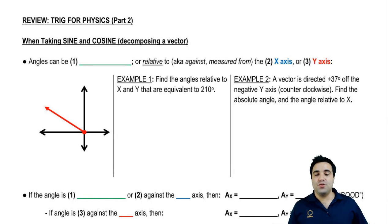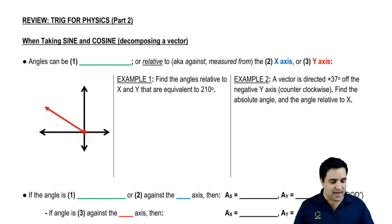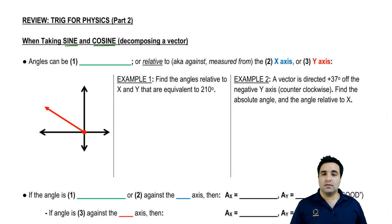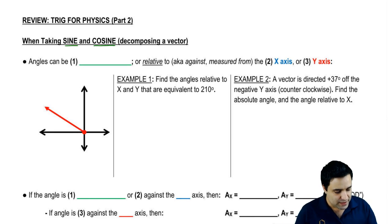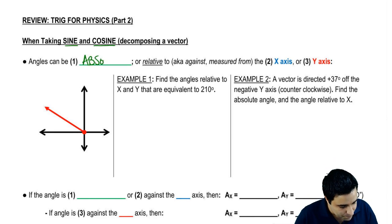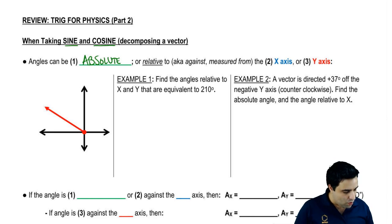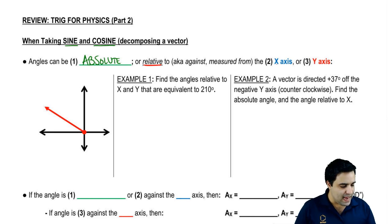Hey guys, so two out of the three trig functions we're going to be using all the time are sine and cosine. There are specific things you need to know about those functions when you're using them. Before we start, I want to talk about angles. There are three basic types of angles: they can be absolute, or they can be relative to the x-axis or y-axis.